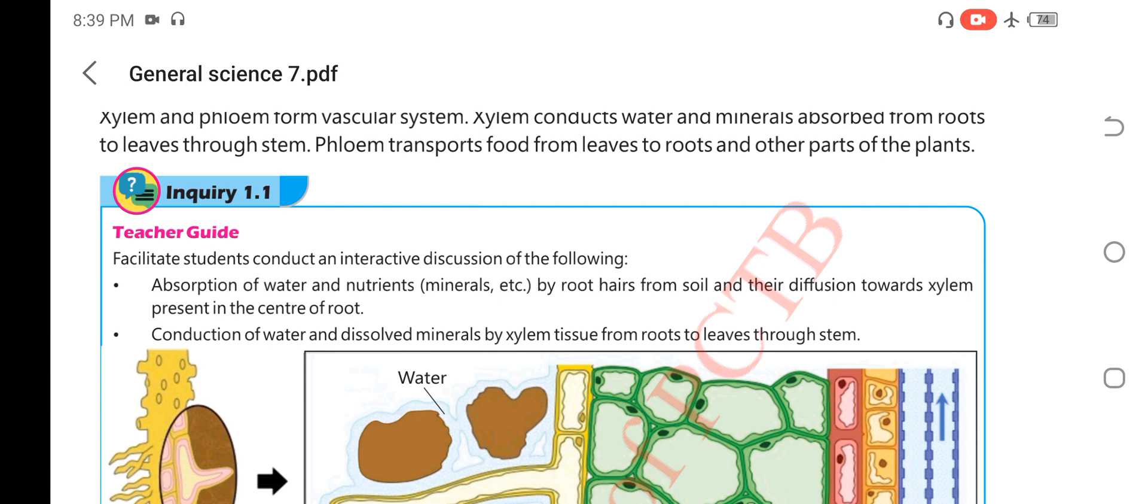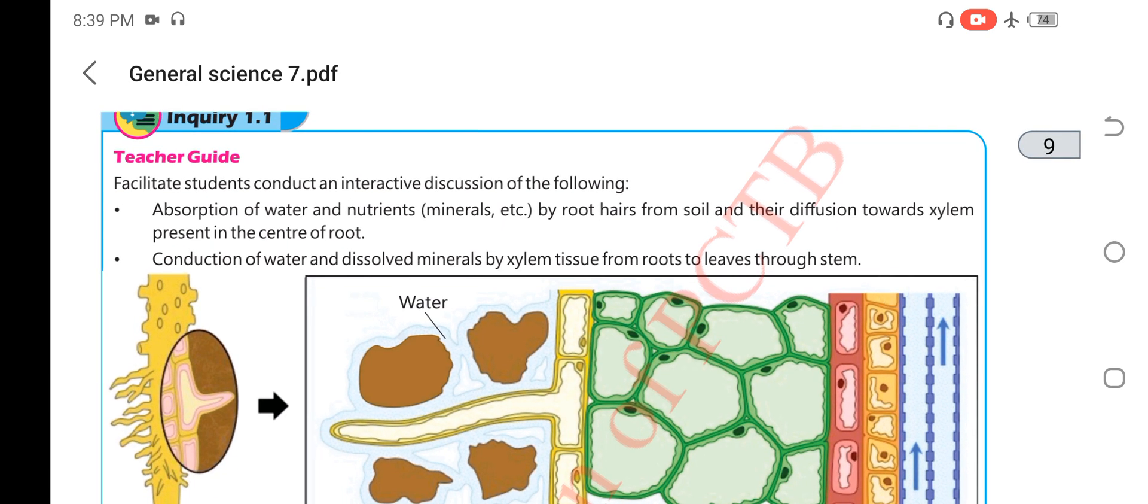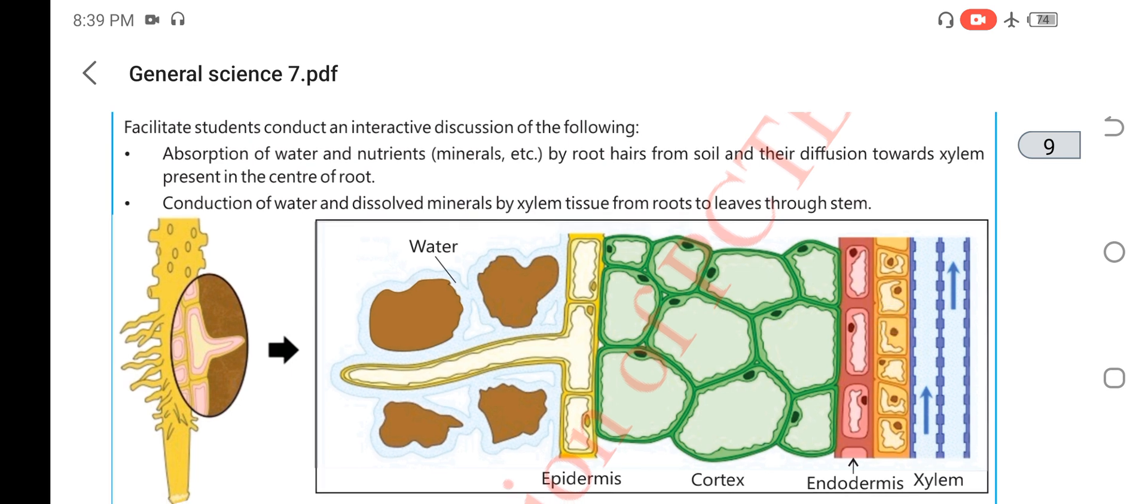Here is an activity. Teacher guide: facilitate students to conduct an interactive discussion of the following: absorption of water and nutrients by the root hairs from the soil and their diffusion towards xylem present in the center of the root; conduction of water and dissolved minerals by xylem tissues from roots to leaves through stem.